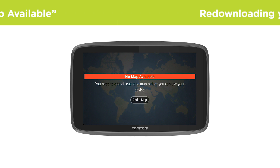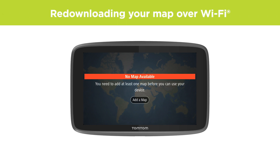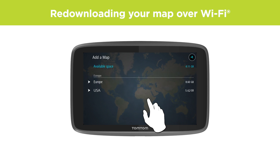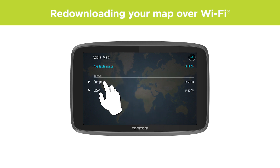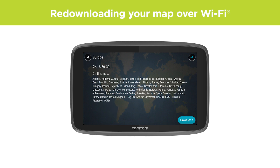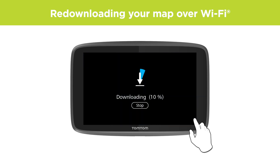To resolve this, you need to download your map again. Select 'Add a map' on your device. Select a map from the list to see more information, such as its size and the countries that are covered by it. When you have decided on a map, select 'Download'.